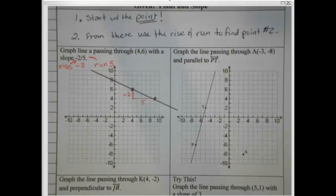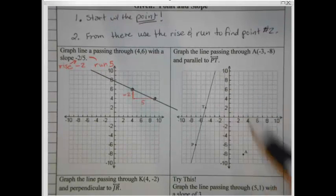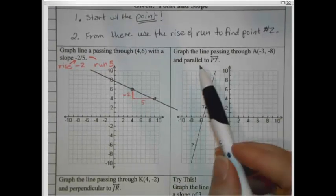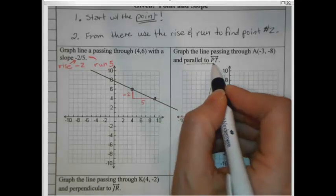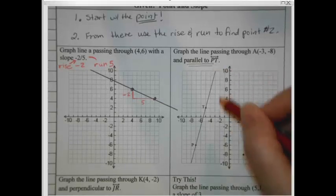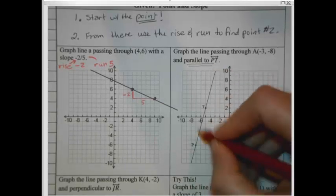Okay, now let's look at this next one. We're going to graph the line that passes through point A. We've already got it plotted here at 3, negative 8. And our job is to make sure it runs parallel to PT. What does that have to do with anything? Well, from our last lesson, you might remember that parallel lines have what? Equal slopes. So I need to figure out the slope of my line PT, and I need to copy it on my new line. Let's go ahead and do that right now.